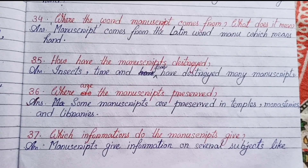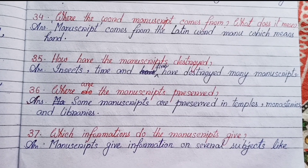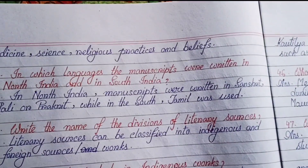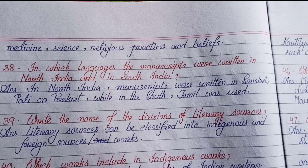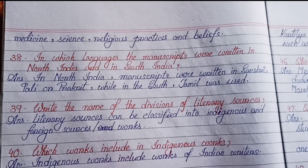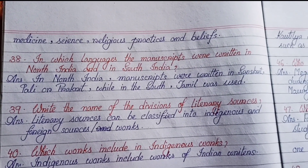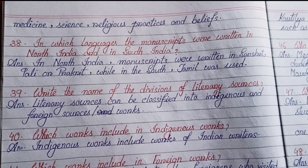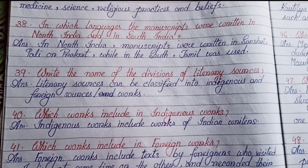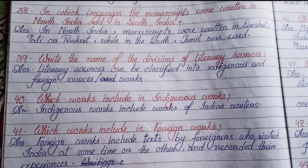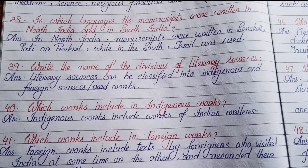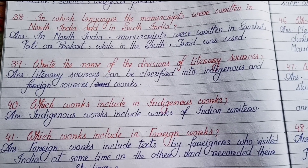Number thirty-six: Where are manuscripts preserved? Some manuscripts were preserved in temples, monasteries and libraries. Number thirty-seven: Which information do manuscripts give? Manuscripts give information on several subjects like medicine, science, religious practices and beliefs. Number thirty-eight: In which languages were manuscripts written in North India and South India? In North India, manuscripts were written in Sanskrit, Pali or Prakrit, while in the South, Tamil was used.